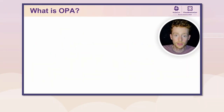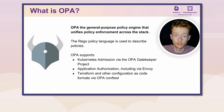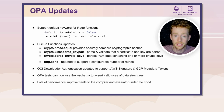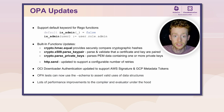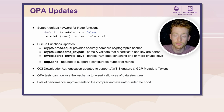OPA is the general purpose policy engine that unifies policy enforcement across the stack, including Kubernetes. Here are the updates since last KubeCon. You can now better handle undefined values and functions with the familiar default keyword. Updates to Rego's built-in functions make it even more expressive. Cloud users of OCI bundles will benefit from the native AWS and GCP authentication support. OPA test can now also catch faulty policy logic using JSON schemas. Finally, there are lots of performance improvements under the hood too.